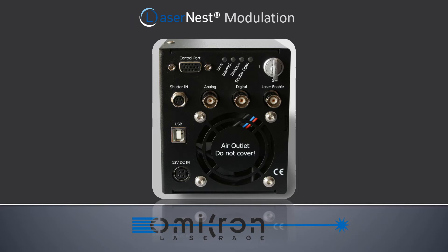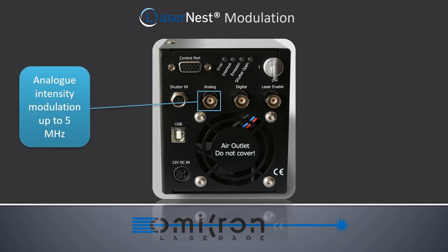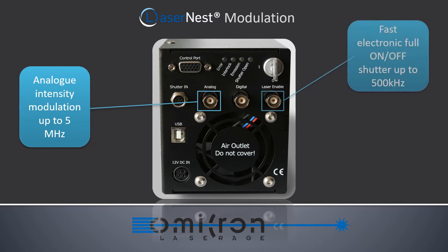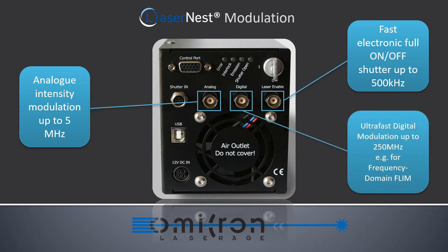The LaserNest offers various modulation inputs: an analog intensity modulation input for up to 5 MHz, fast electronic shutter function up to 500 kHz, and ultra-fast digital modulation up to 250 MHz, which is very useful for applications like frequency domain FLIM.